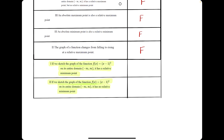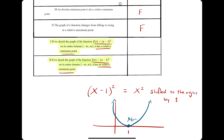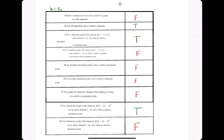The last two statements are both about the function x minus 1 squared — one says it has a relative min, and one says it has no relative min. The function x minus 1 squared is just x squared shifted to the right by 1, forming a parabola opening upward with its vertex at x equals 1. This parabola does have a relative minimum, which is also an absolute minimum. So the statement saying it has a relative minimum is true, while the one saying it has no relative min is false.